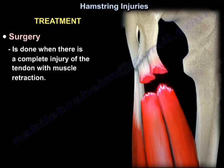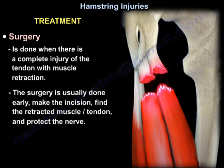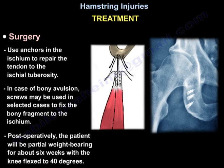Surgery is done when there is a complete injury of the tendon with muscle retraction. Surgery is usually done early: make the incision, find the retracted muscle and tendon, and protect the nerve. The patient is prone, and the tendon is approached by a transverse incision over the gluteal crease, with the tendon repaired with the knee flexed. Anchors in the ischium are used to repair the tendon to the ischial tuberosity. In cases of bony avulsion, screws may be used to fix the bony fragment to the ischium.